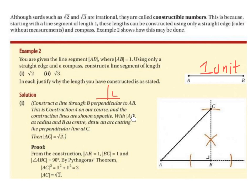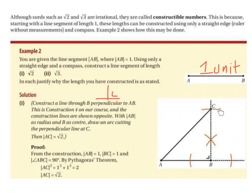With the line segment AB as the radius and B as the centre, draw an arc cutting the perpendicular line at C. We put our compass point on B and open it out until the pencil tip touches A, giving the radius. With the compass point back on B and the distance unchanged, draw an arc through the perpendicular line and label the intersection point C. You only need a small arc, not a full circle.